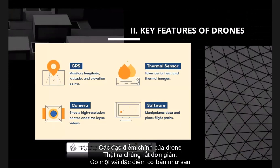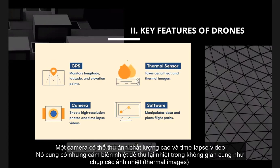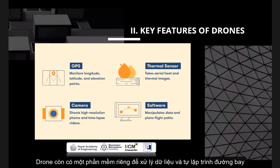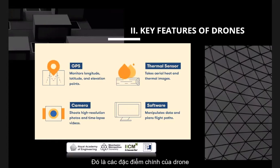A key feature of drones is that it has very basic components. It has a GPS which monitors longitude, latitude, elevation and points. It has a camera that shoots high resolution photos and time-lapse videos. And also thermal sensors that take aerial heat and thermal images — for example, the movement of bodies or the thermal reaction of a building under construction. And it has software which manipulates data and plan files. All data captured through GPS, camera or thermal sensor can be sent to a computer by software, and the drones are also operated by software.